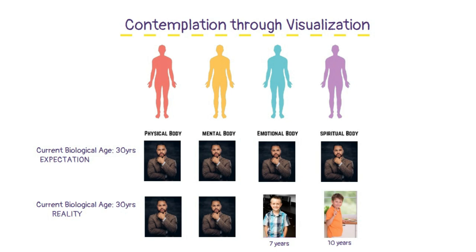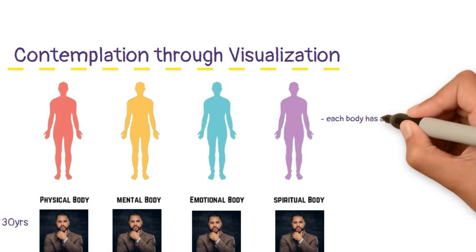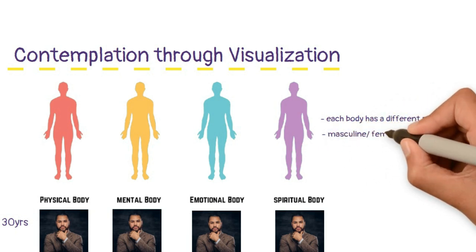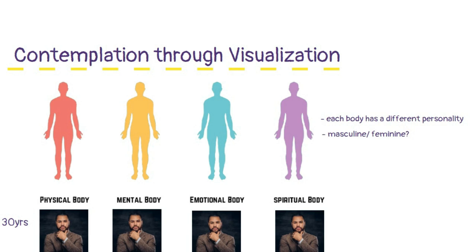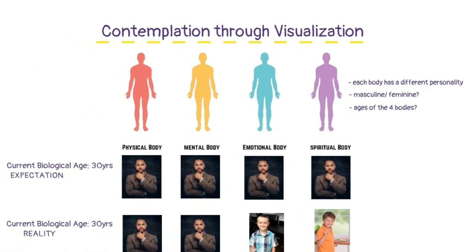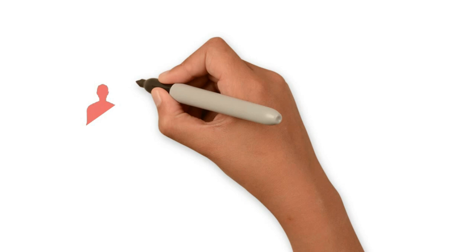As you contemplate and build awareness of these four bodies, you might find that each body has a different personality — perhaps one body is more feminine, another more masculine, or one body might feel 65 years of age even though your biological age is only 30. Start to play around and see what opens up for you. There is no right or wrong answer here — your answers will change as your consciousness develops. Once you start working with the four-body model and really start to embody its innate wisdom, you will realize that at an energetic level, whenever there is an imbalance between these four bodies, outwardly it may manifest as disease.